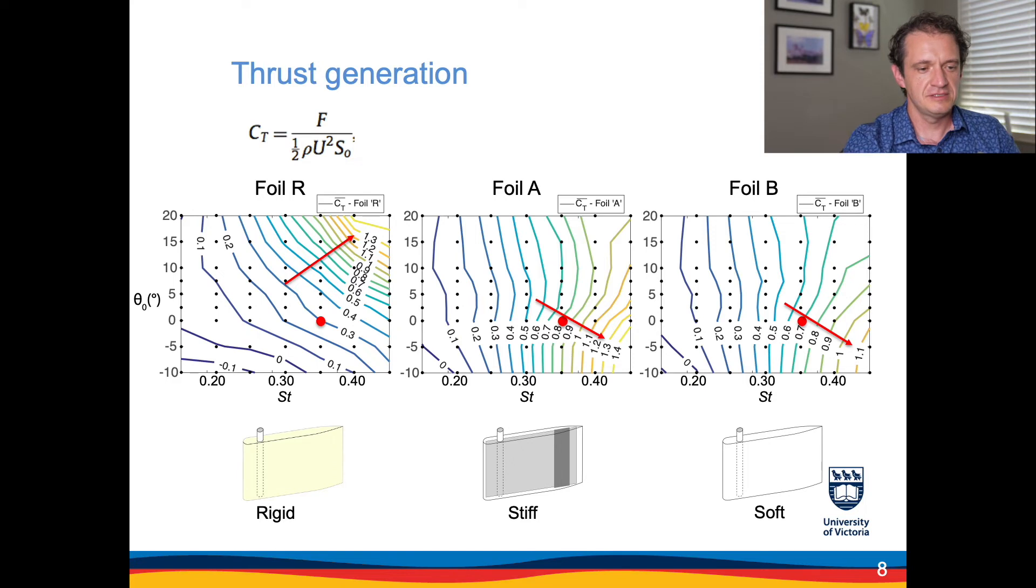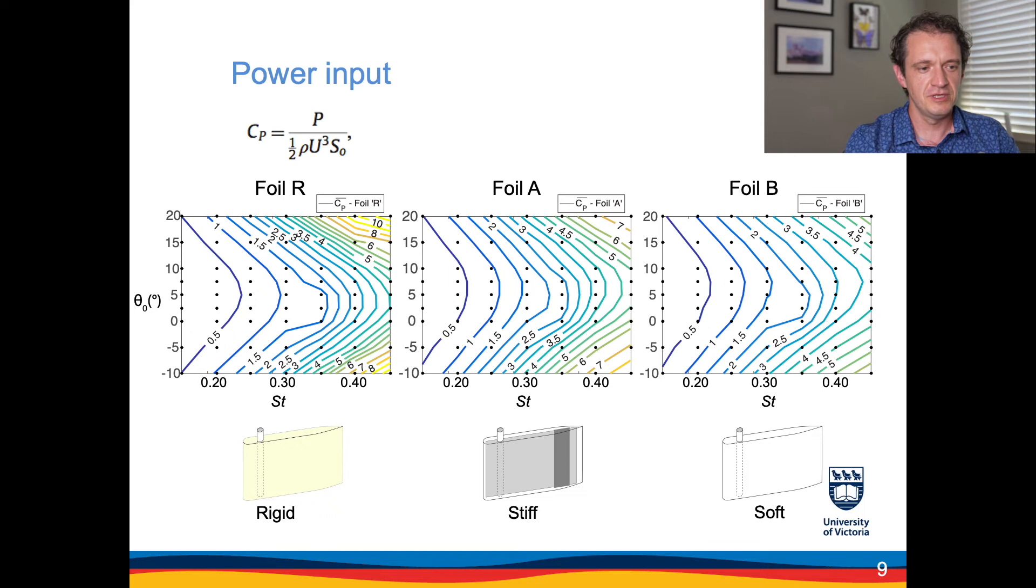But before doing this let's take a look at the input power that's required to achieve this oscillatory motion. So same set of parameters defining the parameter space, so the pitching amplitude and the Strouhal number. But this time we plot the contours of the power coefficient, where P is the input power to the system. And you can see that the plots for the three types of foils look qualitatively the same. So the input power increases as the Strouhal number increases.